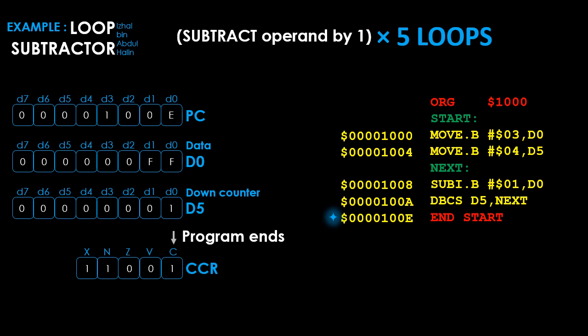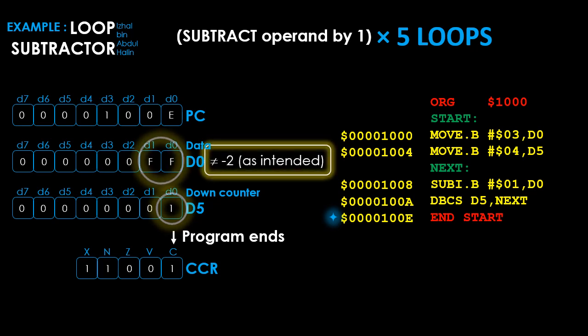Our down counter, register D5, was never decremented to negative 1 to stop the branch as intended. Instead, D5 stopped at 1 because the subtract instruction caused the C flag to be set while looping. Thus, the subtract instruction was only executed 5 times, causing D0 to decrease from 3 to negative 1 — not from 3 to negative 2 as intended. Please be careful of this situation when using any DBCC instruction. The instruction before any DBCC instruction may have the potential to stop your branch before it even takes place, if it sets the condition codes to 1.